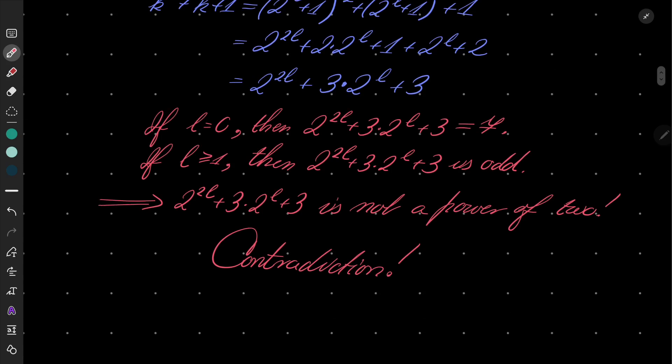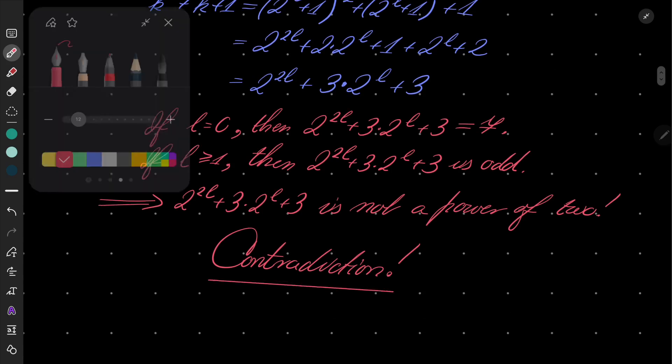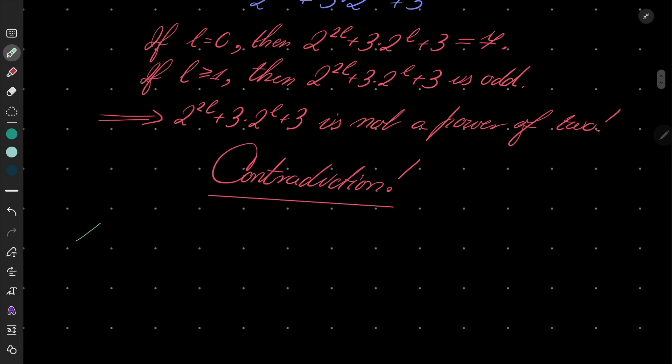So we have a contradiction, which means that 2 to the power 2 to the power of n plus 1 is never a perfect cube.